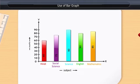Now, we will calculate marks for each subject: 60 marks in Hindi, 75 marks in Social Science, 90 marks in Science, etc.